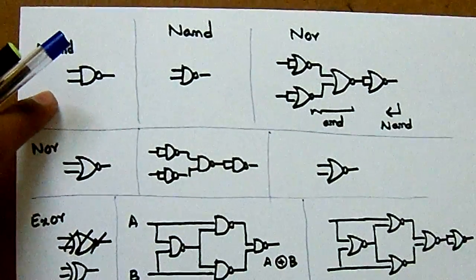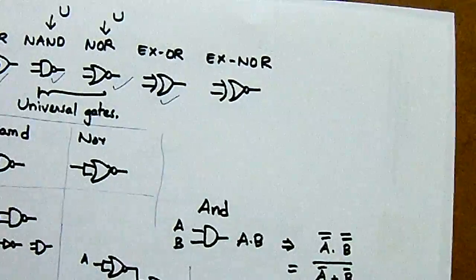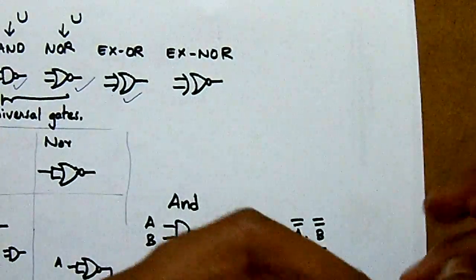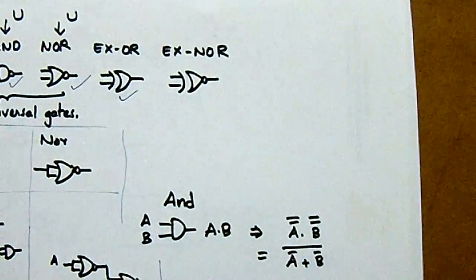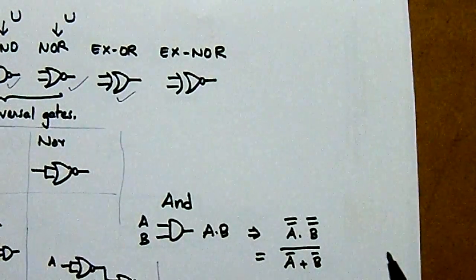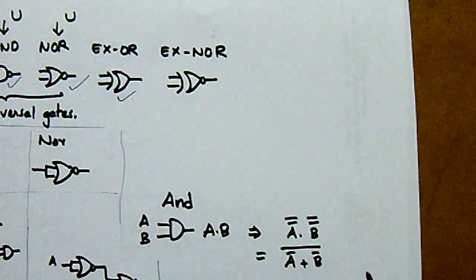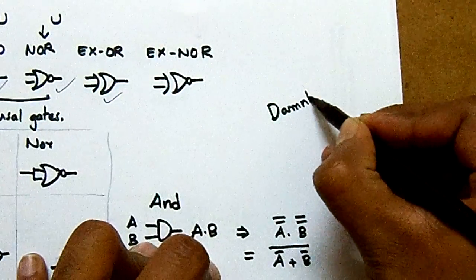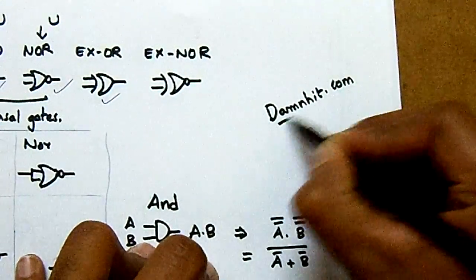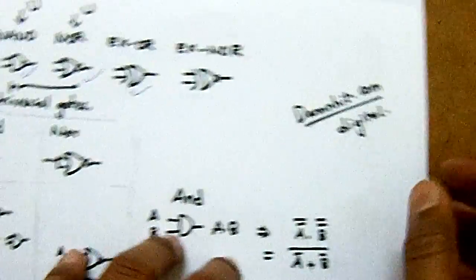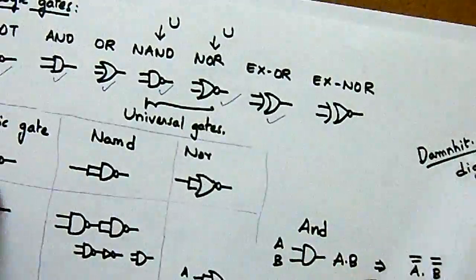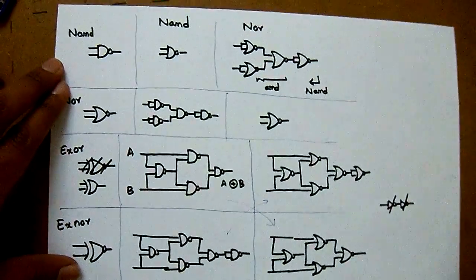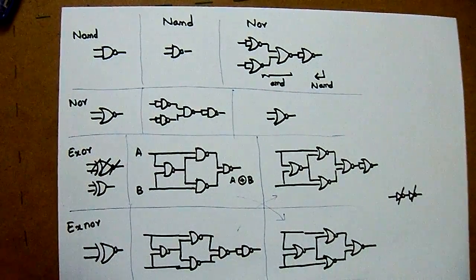I will also upload scanned copies with further explanation of why these are called universal gates and why in actual chip design only NAND gates and NOR gates are used. Those details will be available at damhit.com in the digital section. Thanks for watching, have a good day.